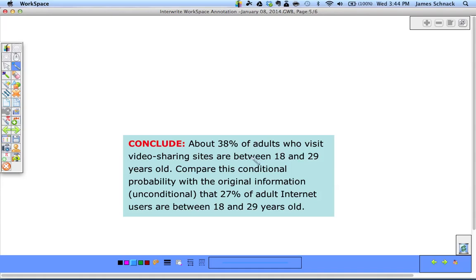That's higher than the unconditional probability that 27% of adult internet users are between 18 and 29. So by saying that we know they visit video sharing sites, we can be more certain that they're in this particular age group. And that's where we stop today. We'll do plenty more of this conditional probability work as we practice problems.